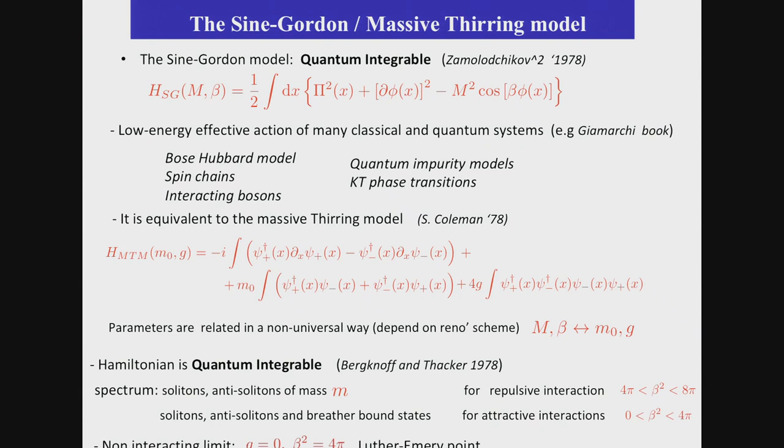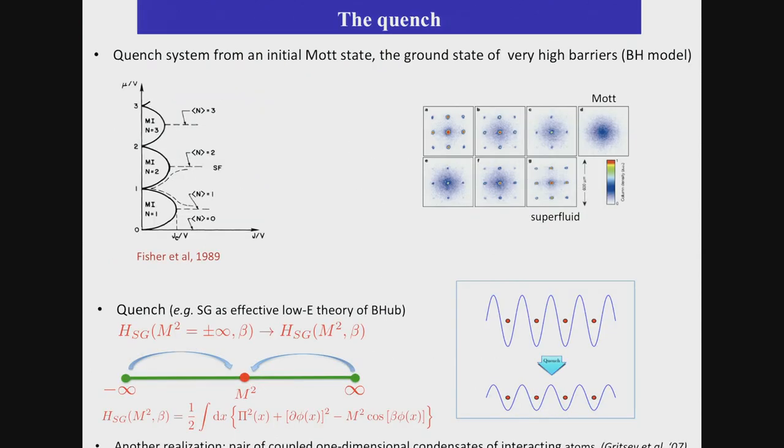If we have attractive interaction, there are also bound states between solitons and anti-solitons, which are typically called breather modes. And there is a very interesting limit, obvious in the language of the Thirring model, but in the language of Sine-Gordon, if we choose beta squared to be equal to 4π, this model is actually a free model. Namely, it becomes a free model where solitons and anti-solitons go through each other freely. Okay, so that's the model.